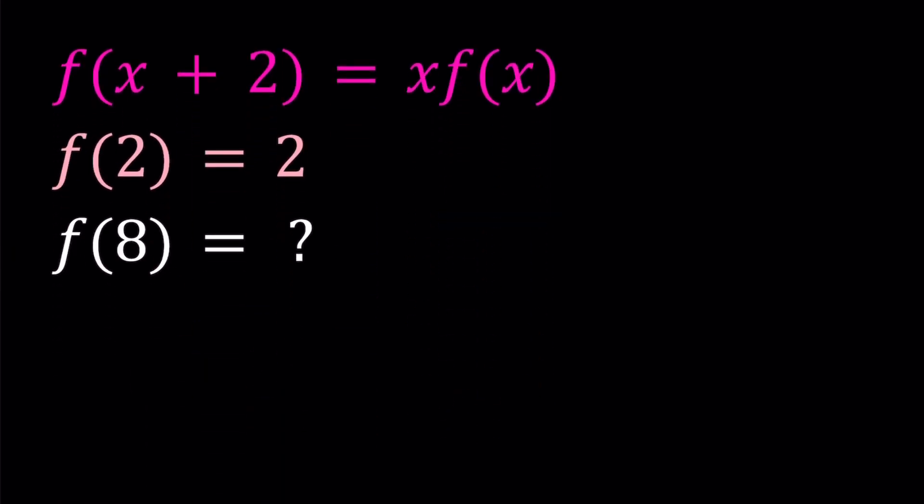Let's get started. In this video, we're going to be solving a basic functional equation. We have f(x+2) equals x times f(x), and we're also given that f(2) is equal to 2, and we're going to find f(8) from here.